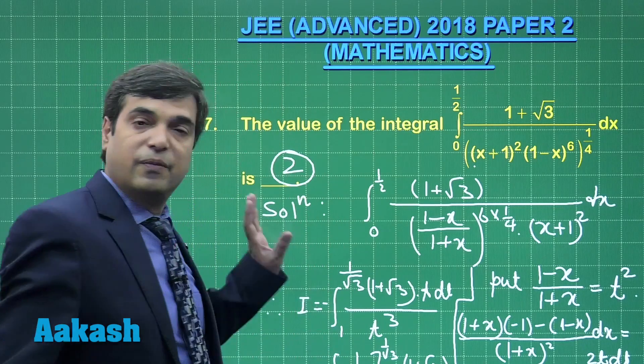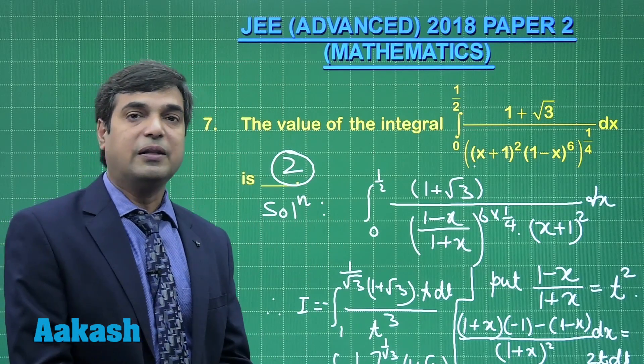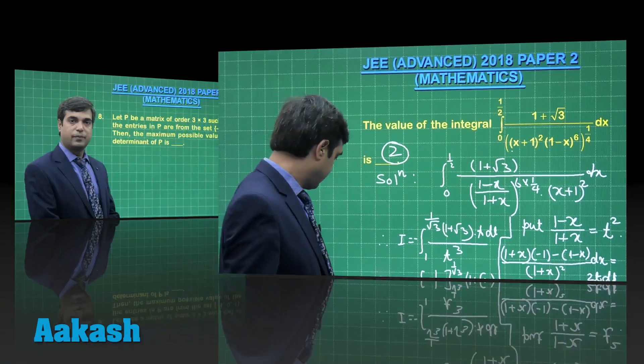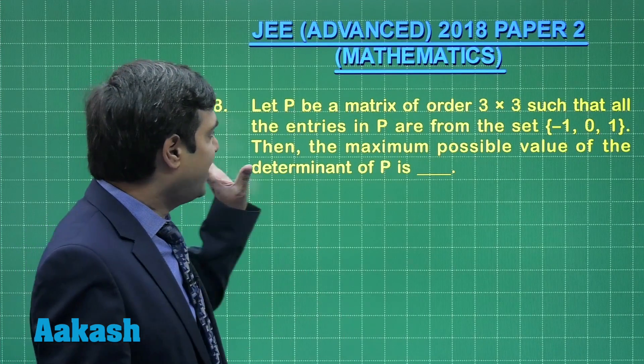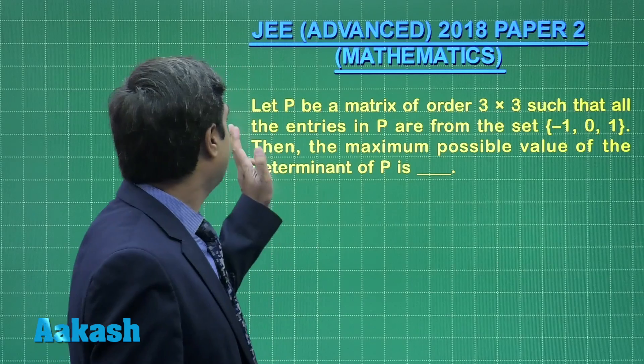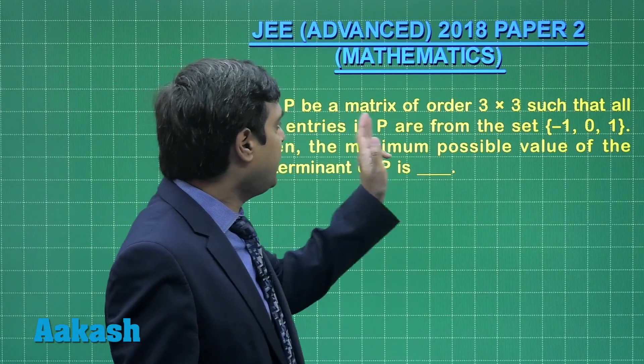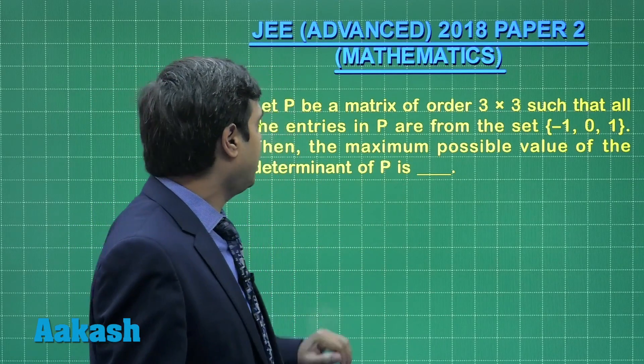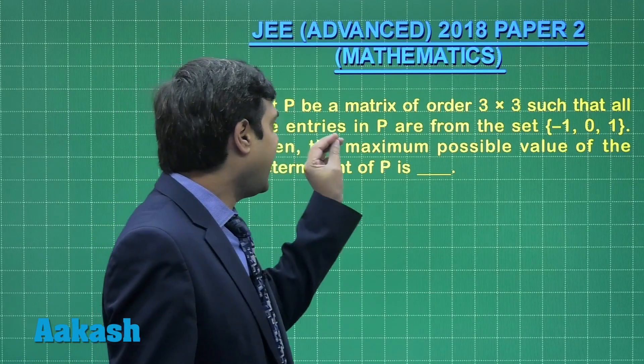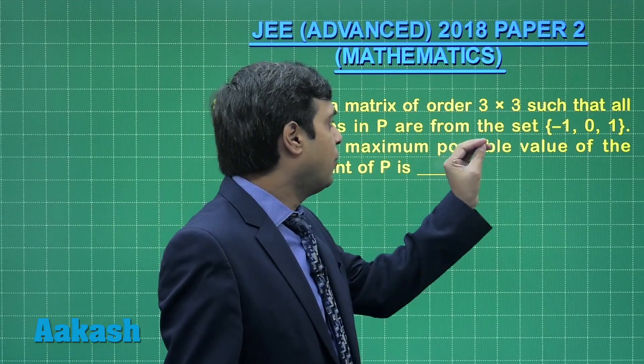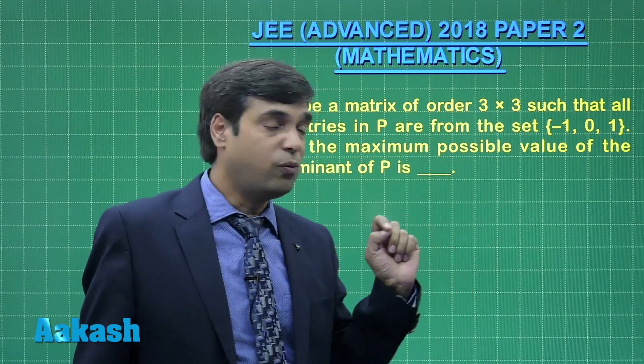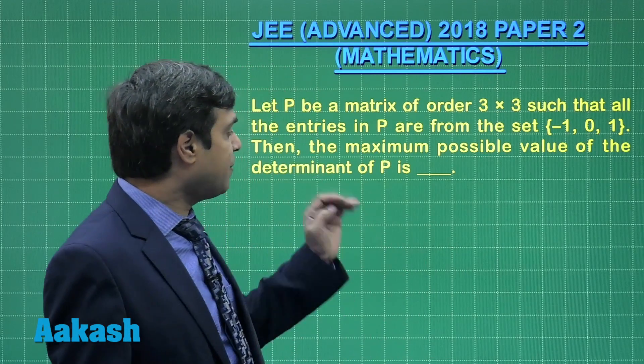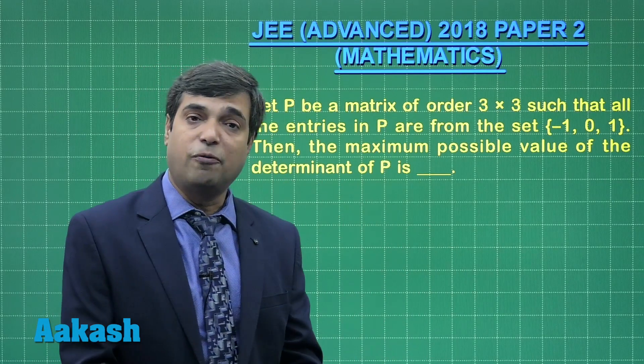Moving to the next question, that is question number 8. One standard question from matrices and determinant. Let P be a matrix of order 3 by 3 such that all the entries in P are from the set {-1, 0, 1}. Then, the maximum possible value for the determinant of P is